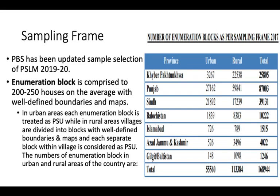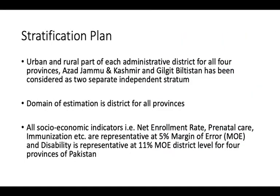In Khyber Pakhtunkhwa, the urban population number of enumeration blocks, per the sampling frame of 2017, is 3,267. This shows the distribution in urban and rural areas. This is a general outlook of how sampling and investigations were made, not only at the national scale, but starting from the district level, then provincial, followed by national level.